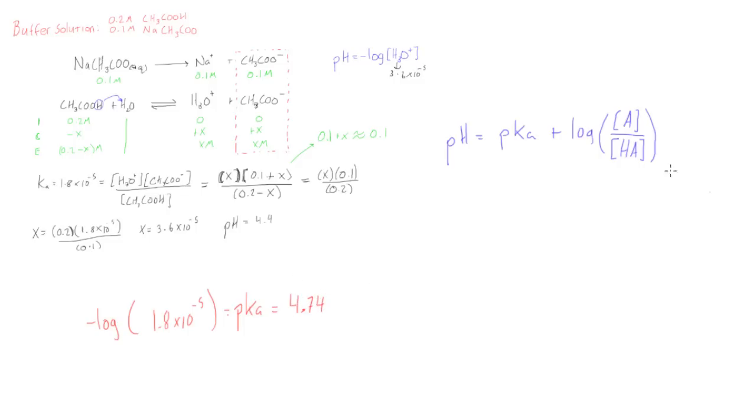Okay, so now we know that we can go back up here and say that our pH is going to equal 4.74 plus the log of our conjugate base over our weak acid.